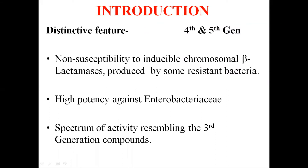Another important quality of 4th generation cephalosporins is their high potency against Enterobacter. Enterobacter causes hyperproduction of group 1 cephalosporinases, and this hyperproduction of enzymes is sometimes responsible for clinical failure of cephalosporins. The 4th generation cephalosporins work actively against this, making it one of their distinctive features.